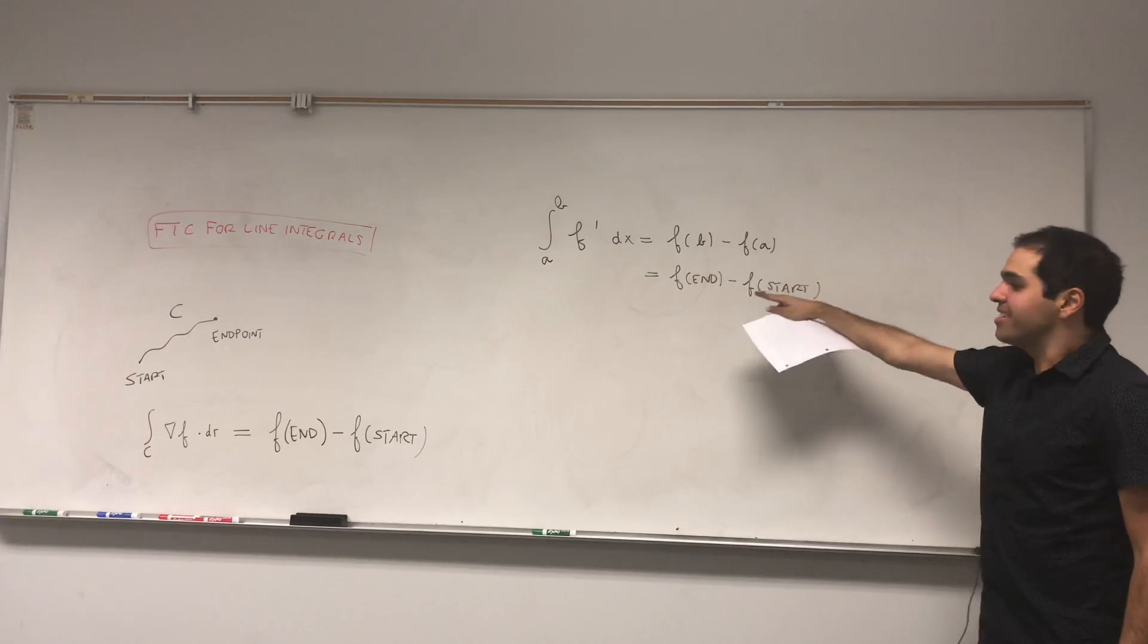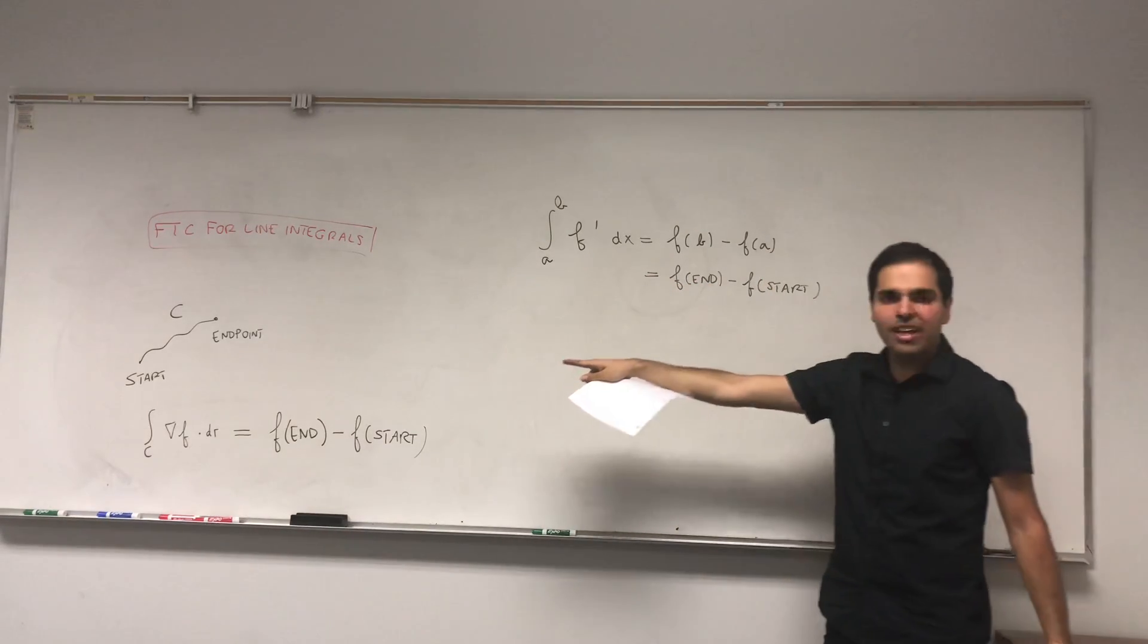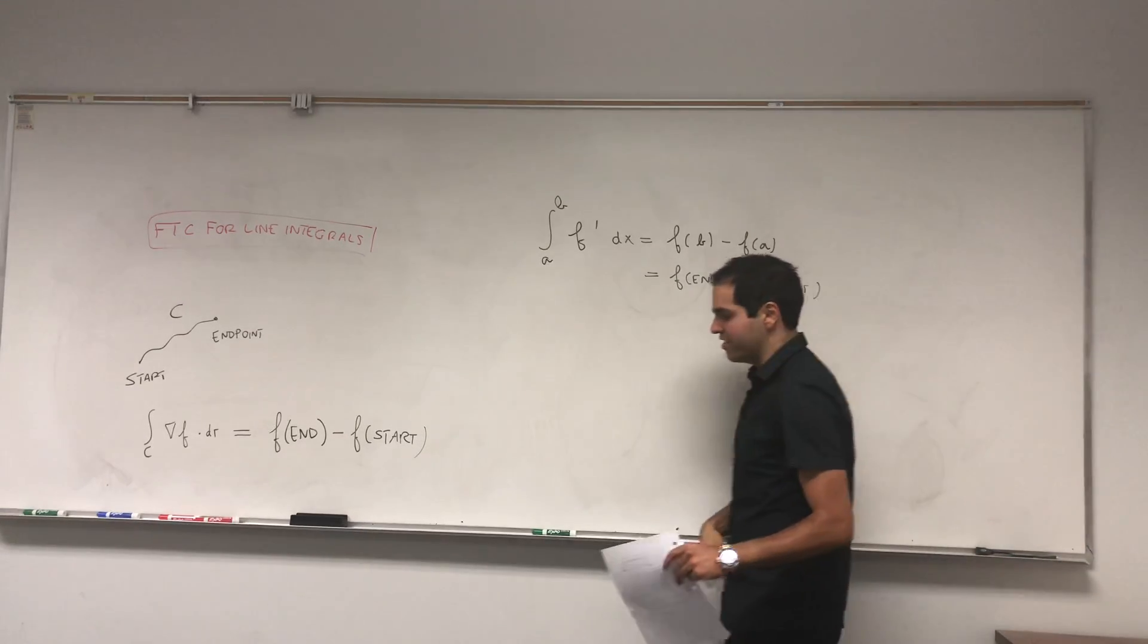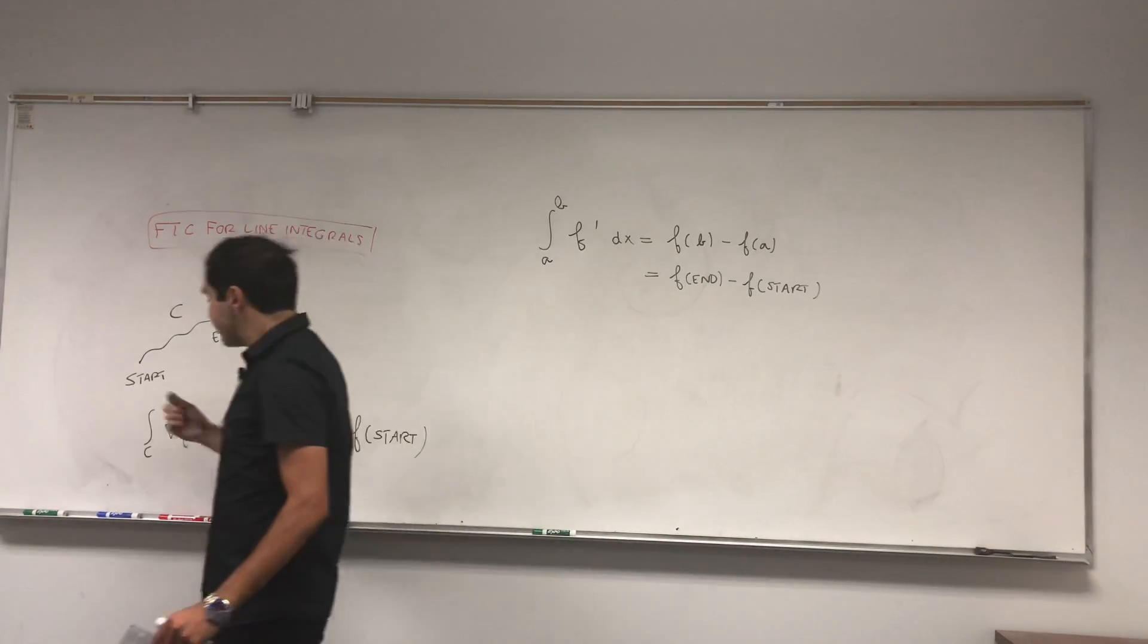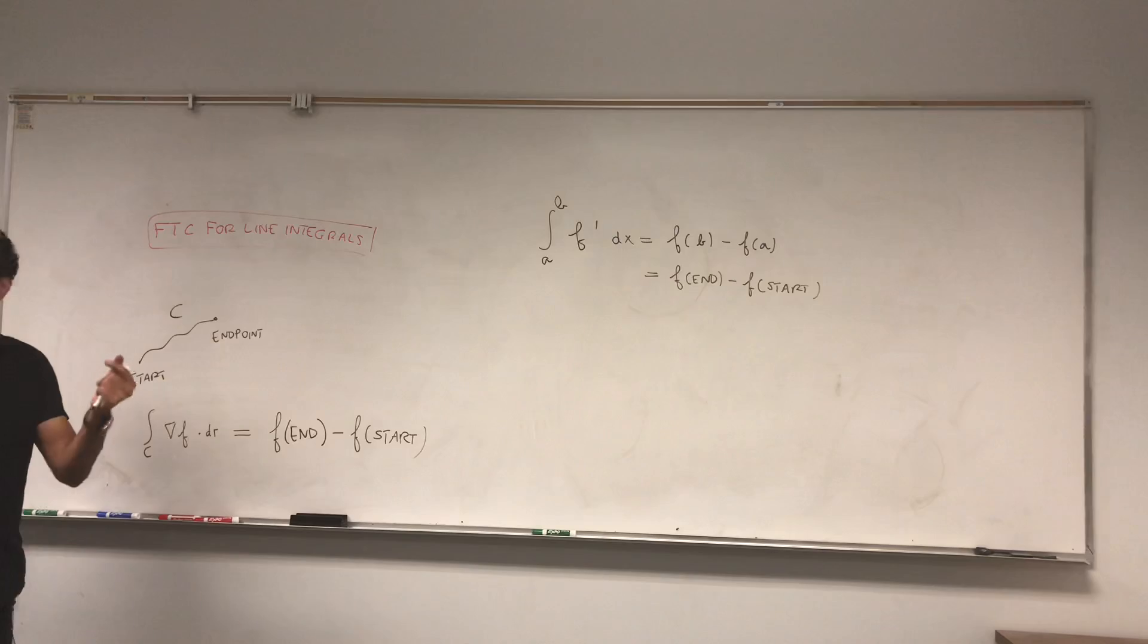So it's the same thing. The analog of derivative in this case is the gradient, and we still have f of the end point minus f of the starting point. In other words, if you take an arbitrary vector field and write it as the gradient of a function, then you're in the game. It's very easy to calculate line integrals.